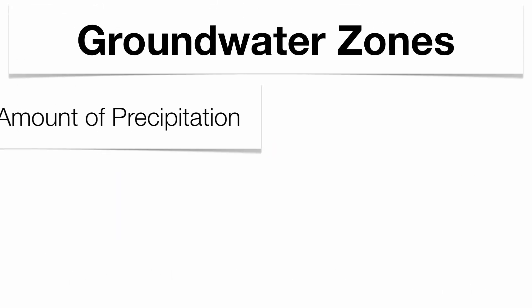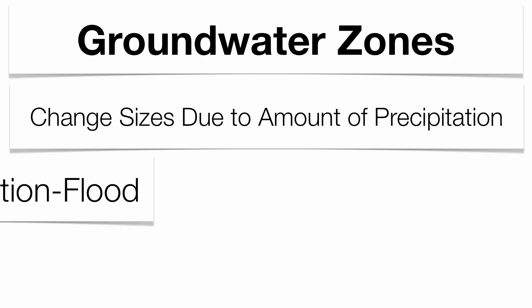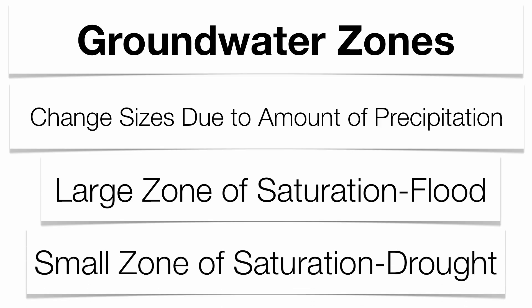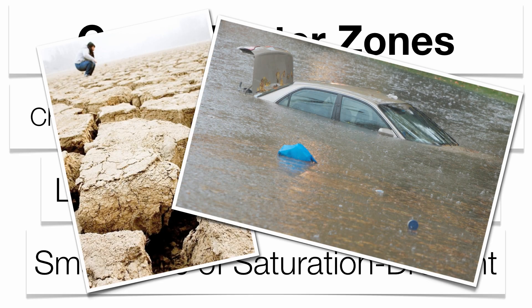The different groundwater zones change size based on the amount of precipitation. Sometimes you can get flood stages, which means a very high water table and a very large zone of saturation. Or you can get droughts, which means a very low water table and a very small zone of saturation.